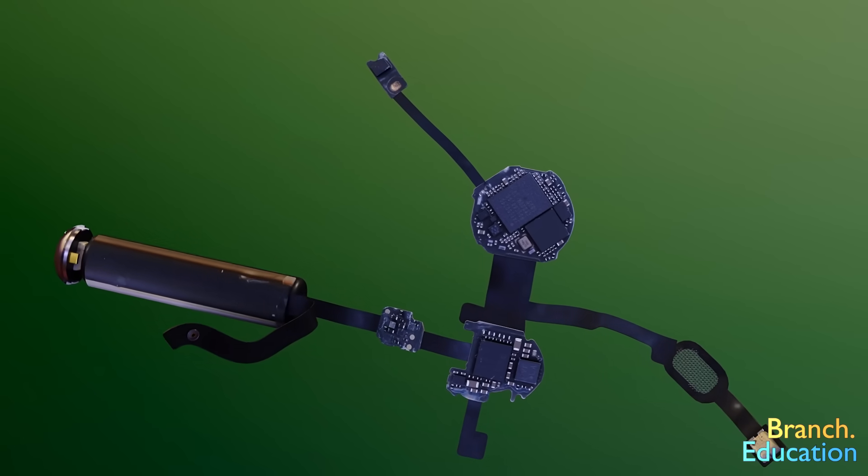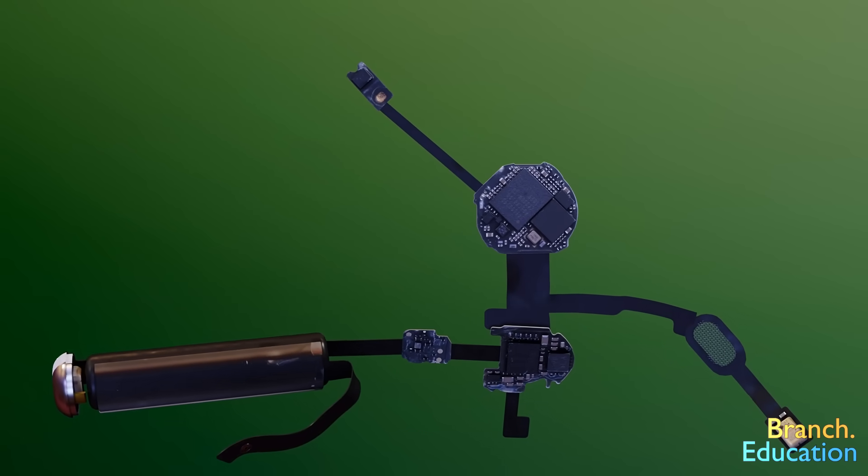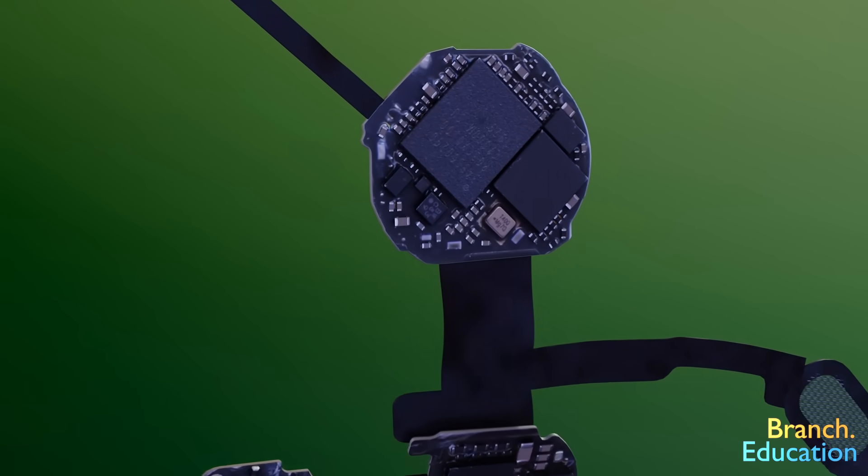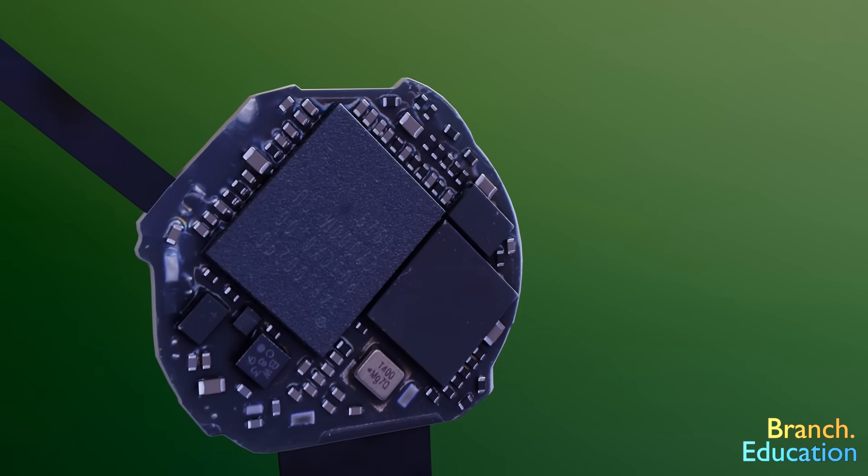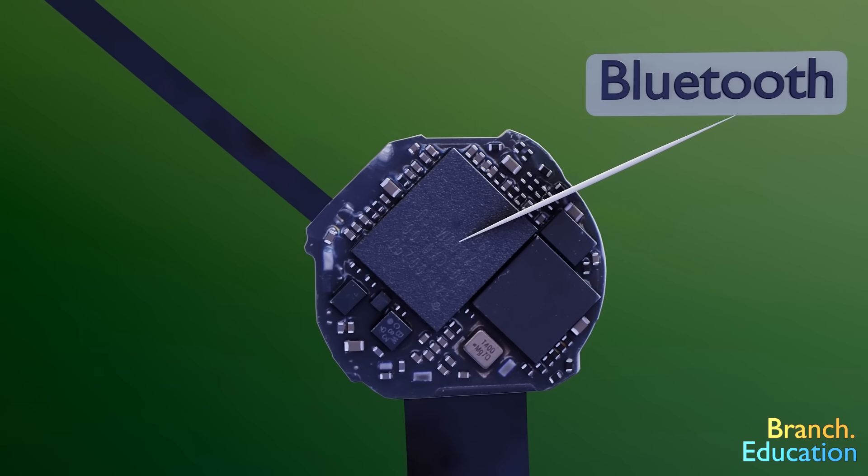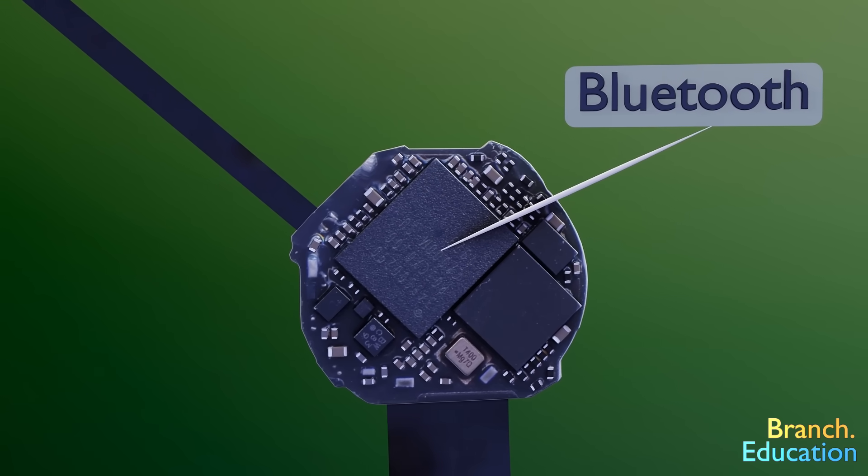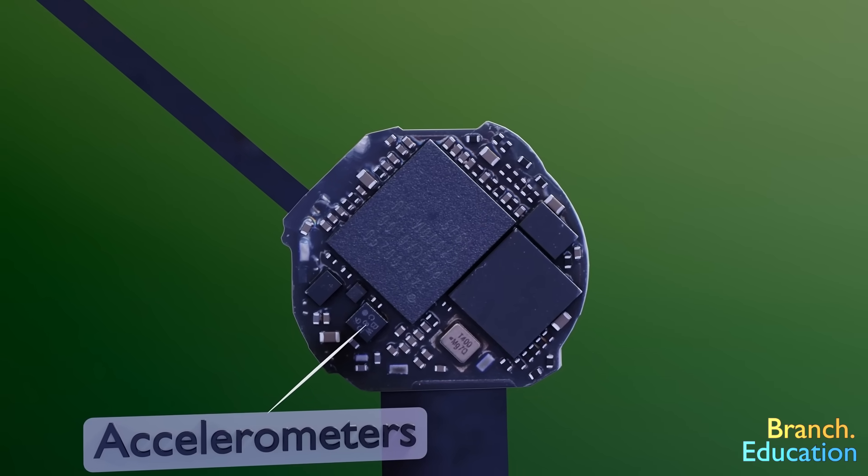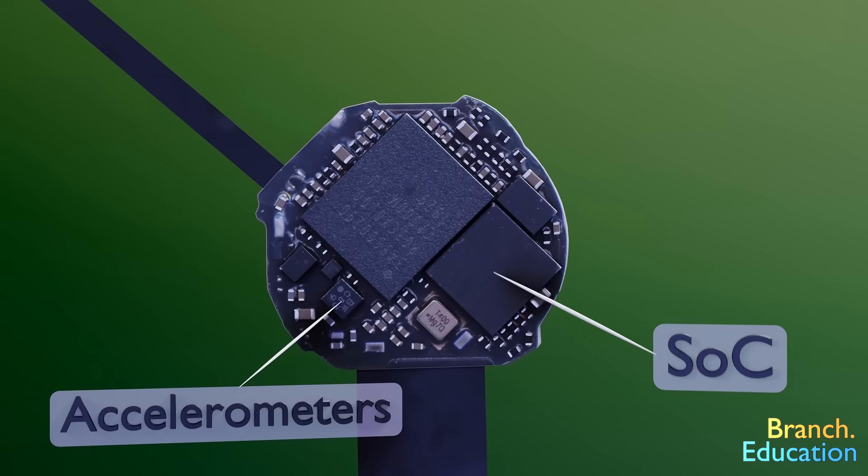This circuitry is essentially three separate printed circuit boards, neatly folded into the earbud, with flexible wires connecting them to make a single PCB. On this top board, which is glued to the backside of the speaker, we find two points where the speaker connects, along with a larger microchip, which handles Bluetooth connectivity and decodes the compressed audio streams sent from the smartphone. We also have a set of accelerometers, along with a programmable SOC.